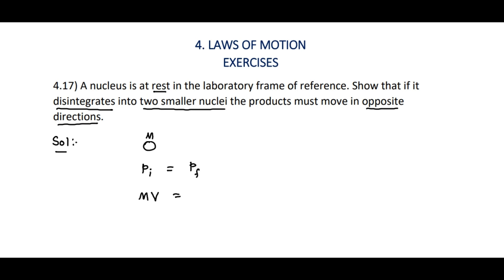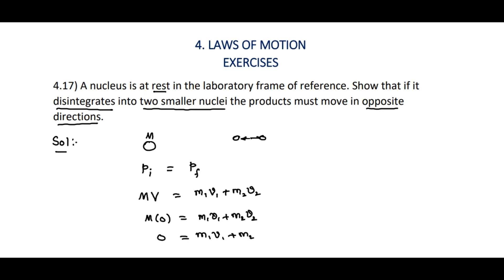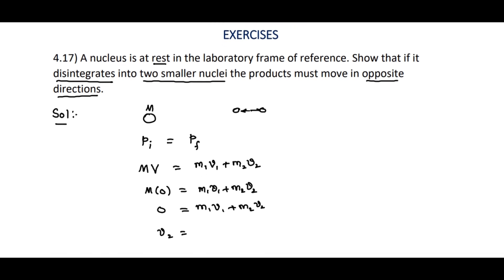After disintegration, one part has mass m1 and velocity v1, and the second part has mass m2 and velocity v2. So M into zero equals m1*v1 plus m2*v2. Therefore zero equals m1*v1 plus m2*v2, which gives us v2 equals negative (m1/m2) into v1.